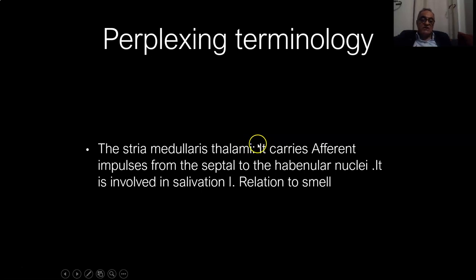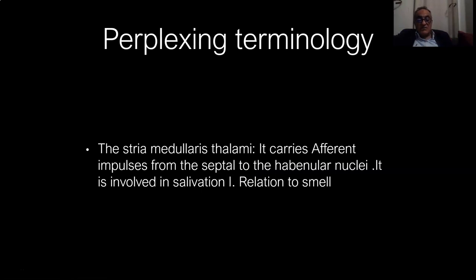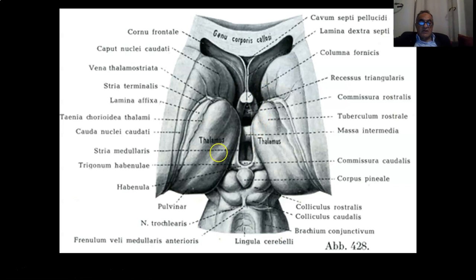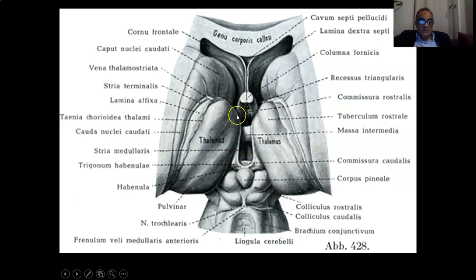Another perplexing term is the stria medullaris thalamae. It carries afferent impulses from the septal nuclei to the habenular nuclei. It is involved in salivation — when you smell the odor of food, you salivate through this mechanism. It is connected to the olfactory system and extends from the habenular nuclei in the habenular trigone anteriorly into the septal region.